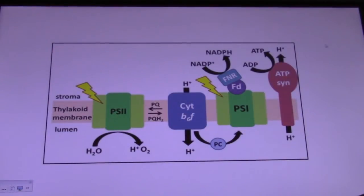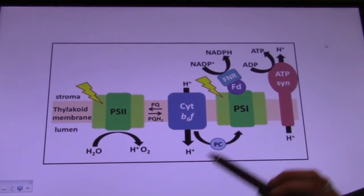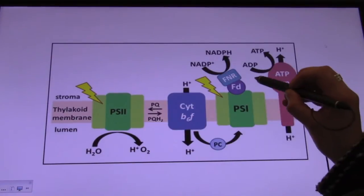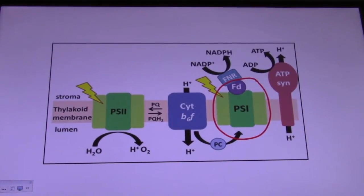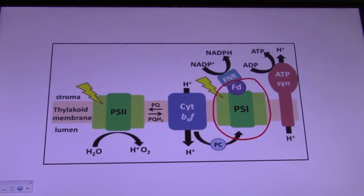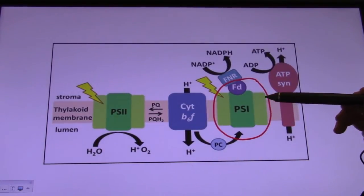More specifically, ferrodoxin is found in photosystem I of photosynthesis. Photosystem I is an integral membrane protein complex that uses light energy to mediate electron transfer from plastocyanin to ferrodoxin.